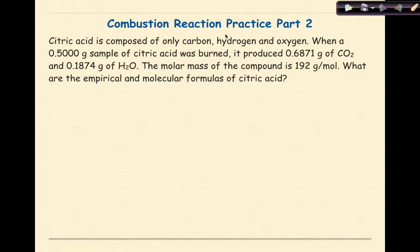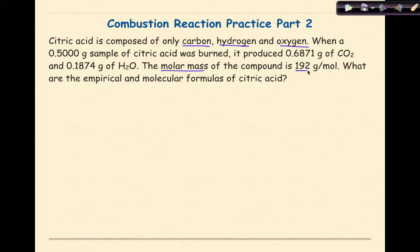Greetings all, this is Combustion Reaction Practice Part 2. Let's look over our problem. Citric acid is composed of only carbon, hydrogen, and oxygen. When a 0.5 gram sample of citric acid was burned, it produced 0.6871 grams of carbon dioxide and 0.1874 grams of water. The molar mass of the compound is 192 grams per mole. What are the empirical and molecular formulas of citric acid?